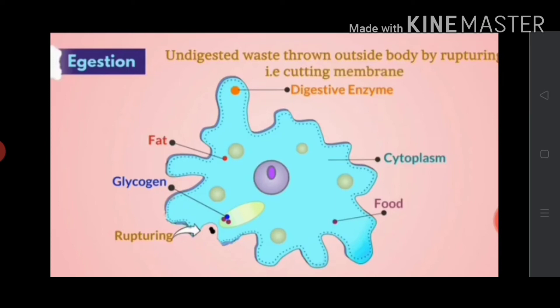And the last step is egestion. The undigested waste is taken near the cell membrane and then thrown outside the cell body by rupturing the membrane. The undigested waste is thrown outside the body by rupturing or breaking the cell membrane. This process is called egestion.